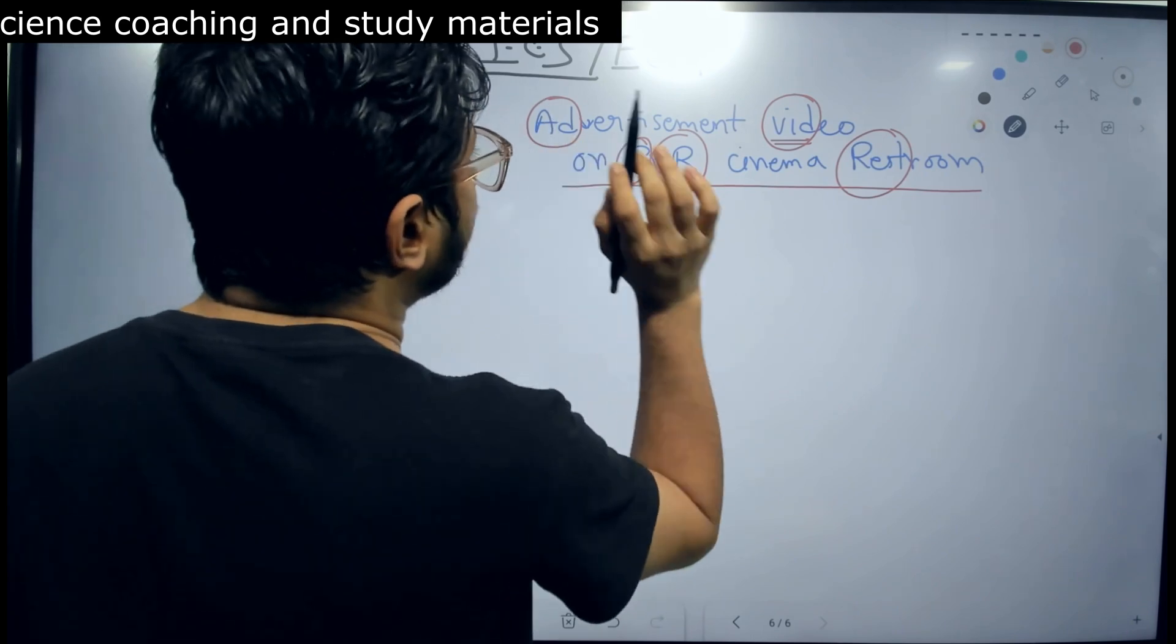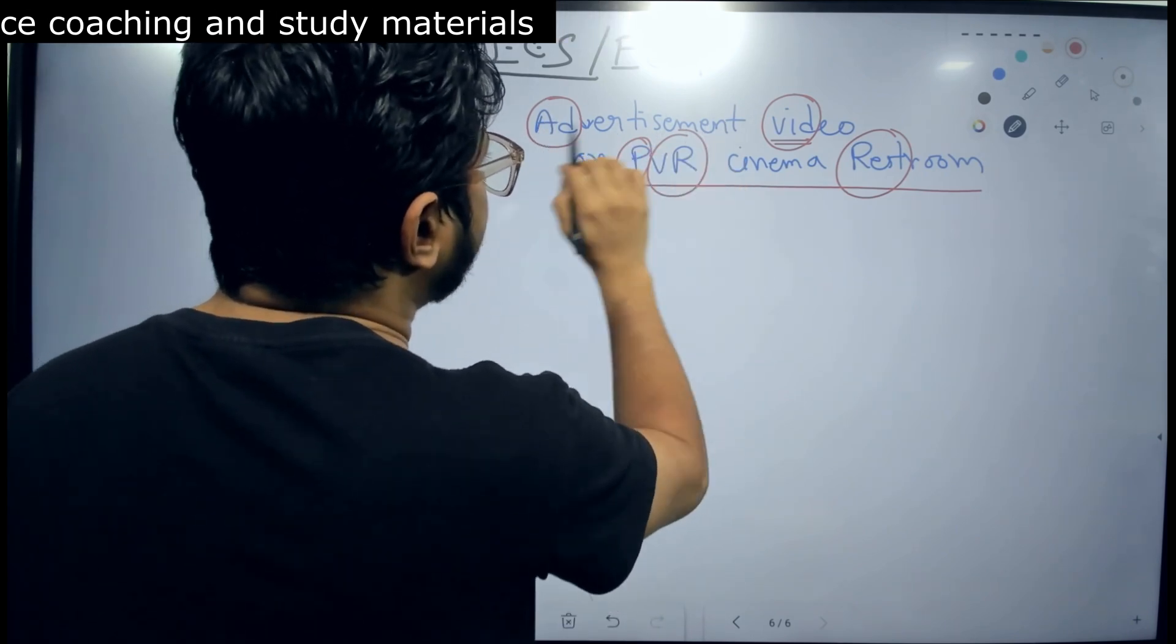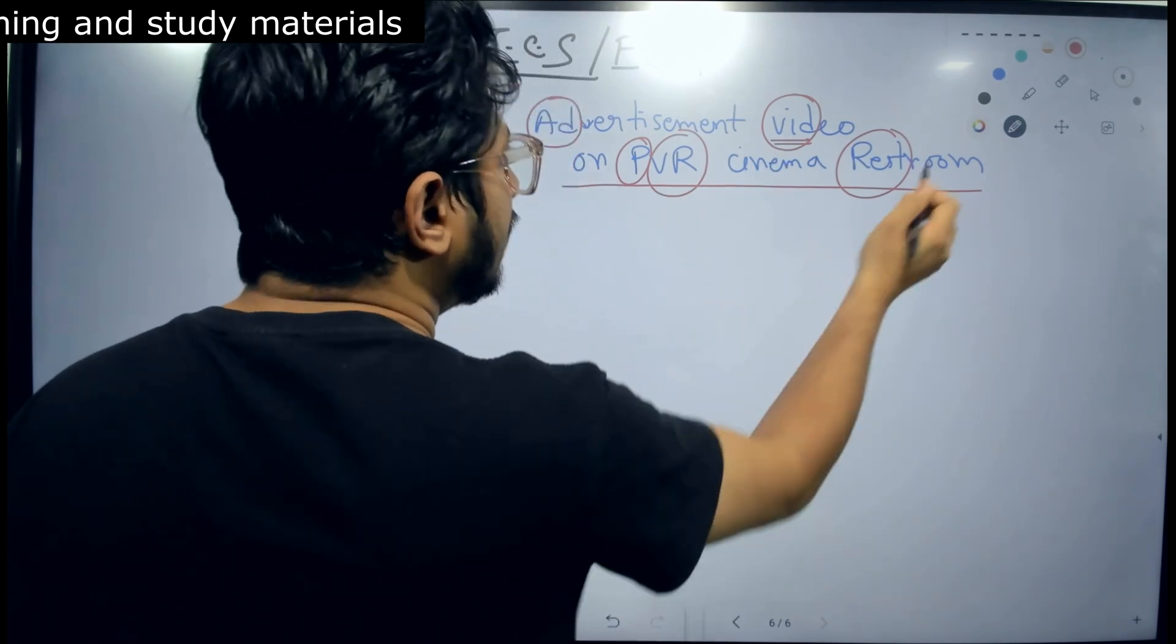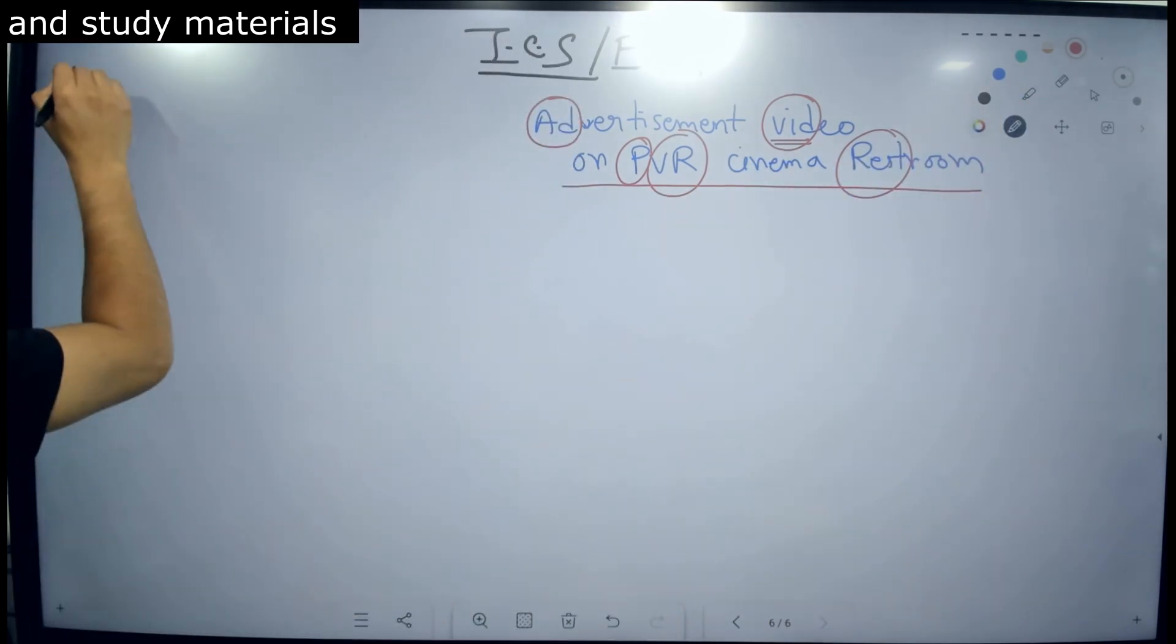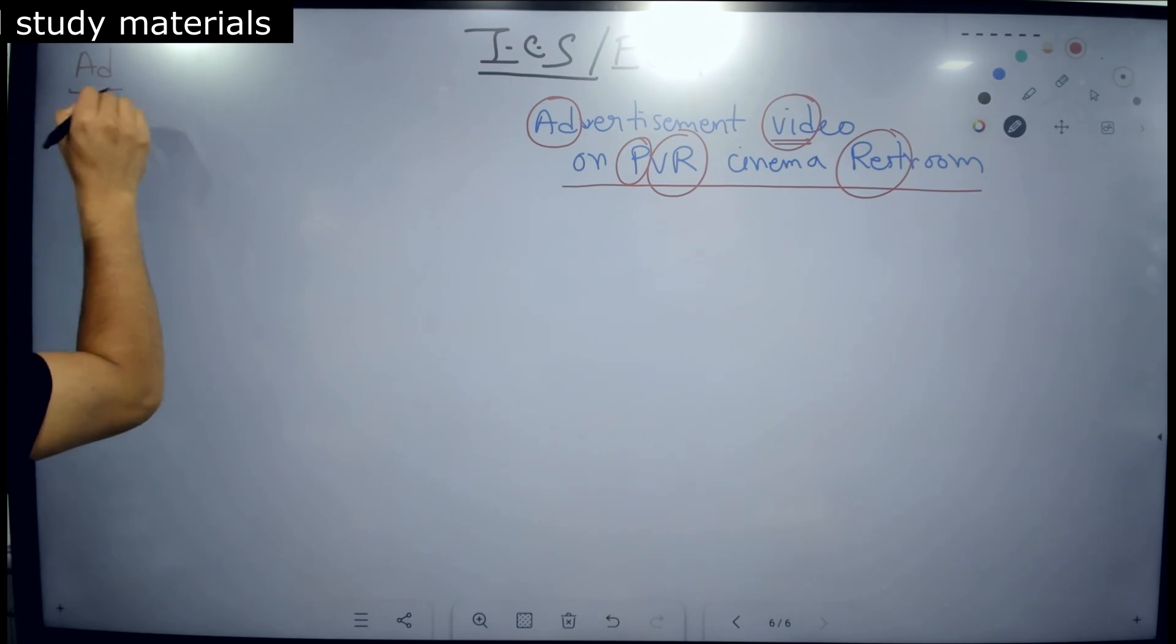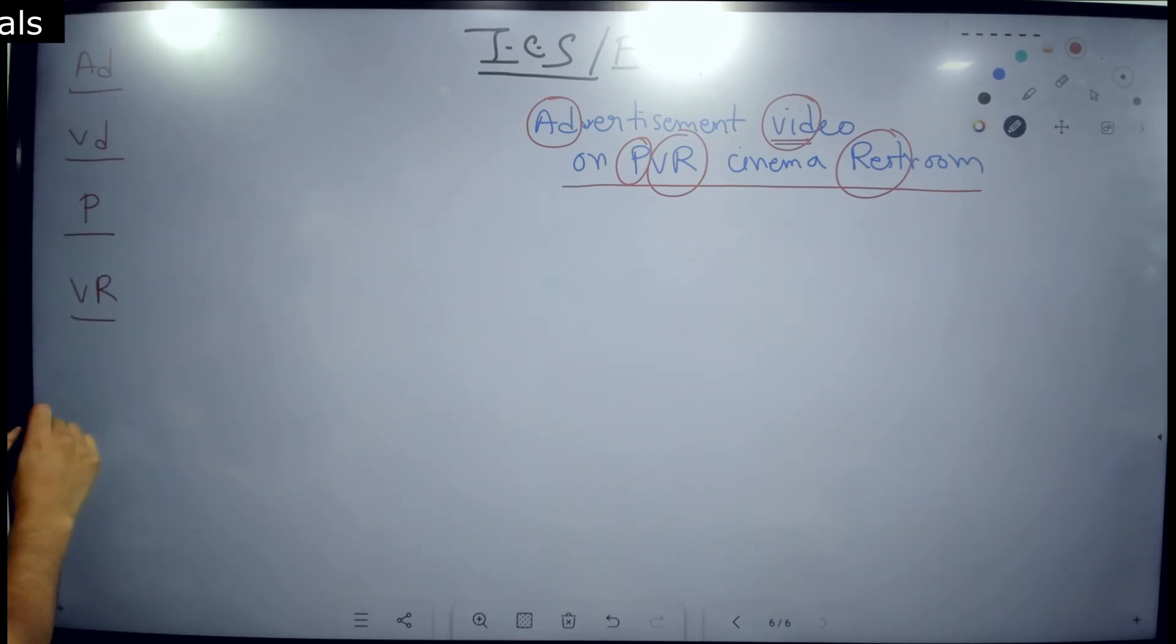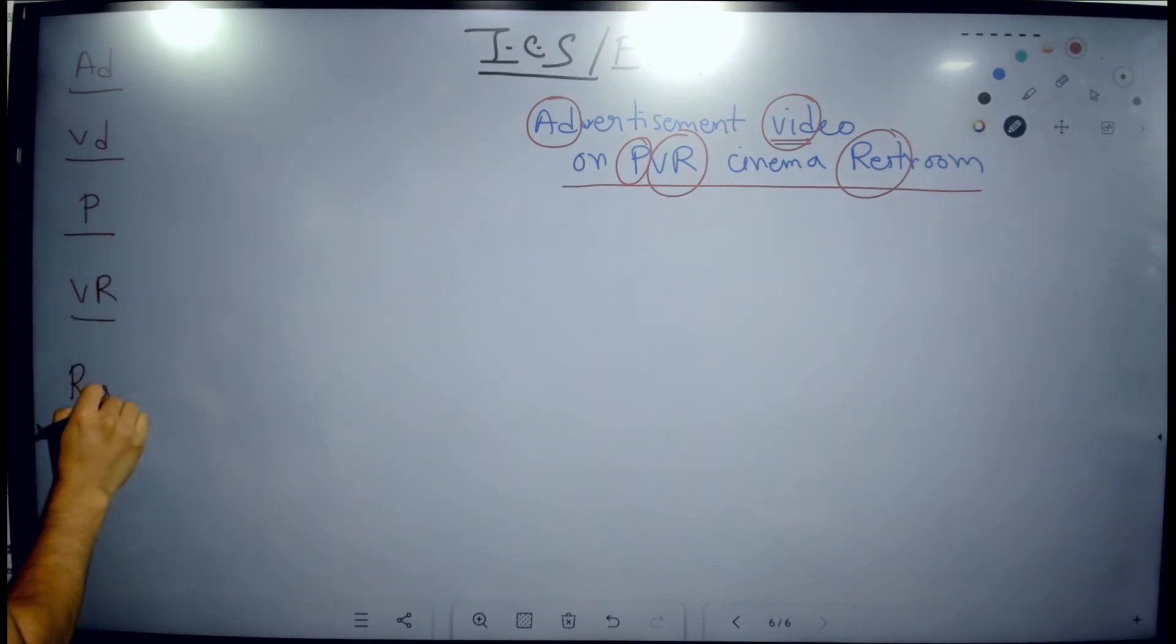The important components are five of it: AD, VD, P, VR and rest. That is all you need to focus. So from this we will get AD, we will get VD, we will get P, we will get VR and we will get rest. We have these five components with it.